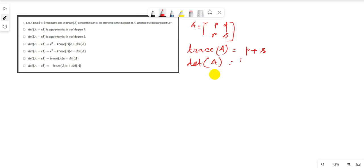Now we have to find det(A - cI). First, A - cI: matrix A [p, q; r, s] minus c times unit matrix [1, 0; 0, 1].